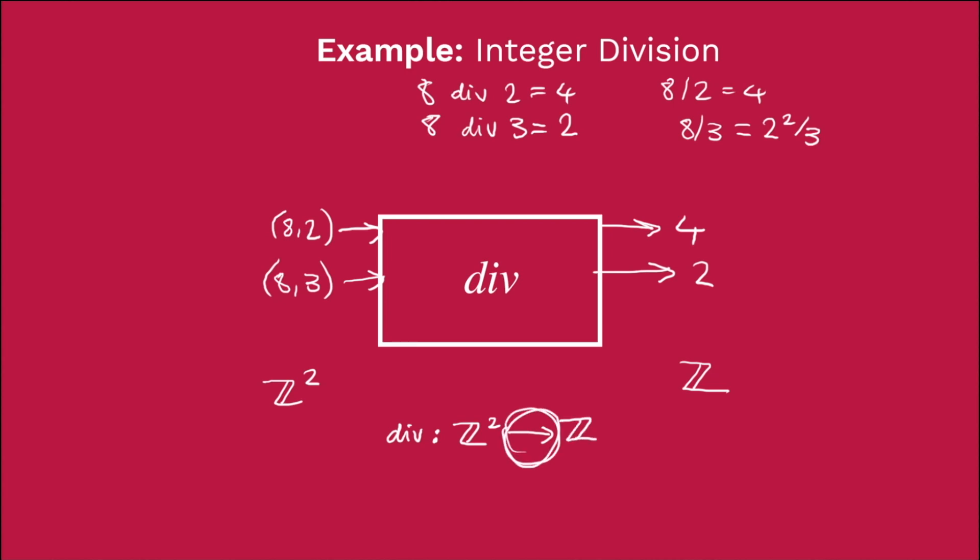The only trouble with that is this arrow here, which says that this is a total function, when actually it's not. So, of course, we could give div a pair of integers, say 5, 0, and div would say, well, what would we expect the answer to that to be? 5 divided by 0 is undefined, right? So actually div doesn't know what to say here. So this is not actually true. It's not actually a total function from pairs of integers to integers. And the way we usually denote this is this kind of half arrow, and we call these partial functions.